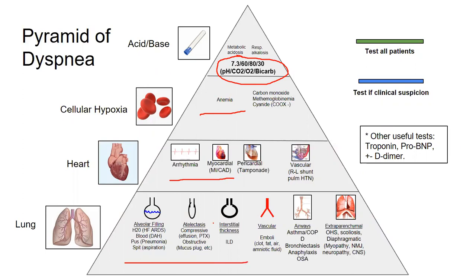How does the hypercapnic finding change your differential? Things here that can lead to hypercapnic respiratory failure: COPD — things that really mess with your airways. A lot of times these patients can't fully expire and have low tidal volumes, so they build up CO2. What else gives you hypercapnic respiratory failure? Extra-parenchymal causes like diaphragmatic weakness — these decrease tidal volume and make it difficult to blow off CO2.